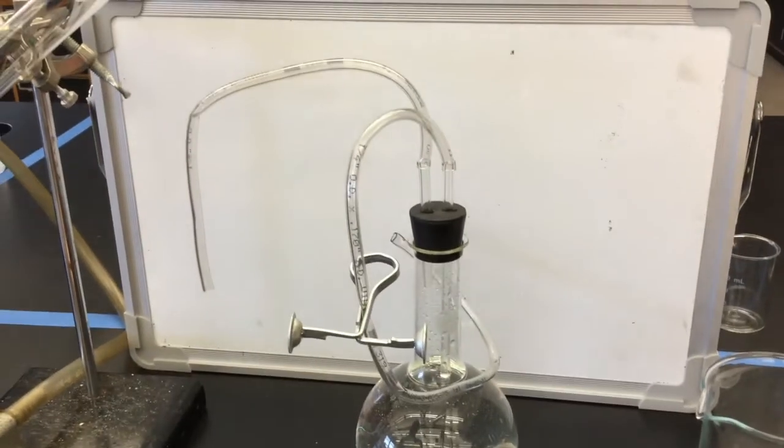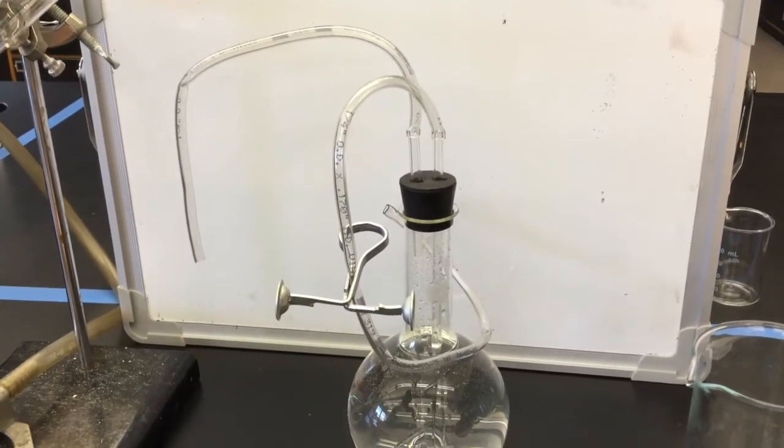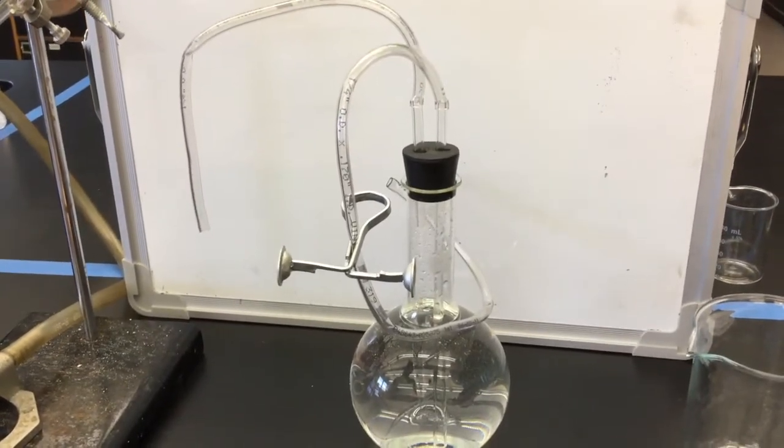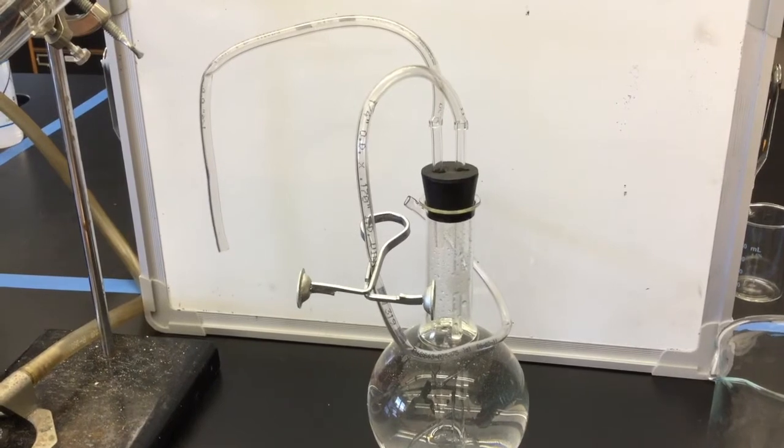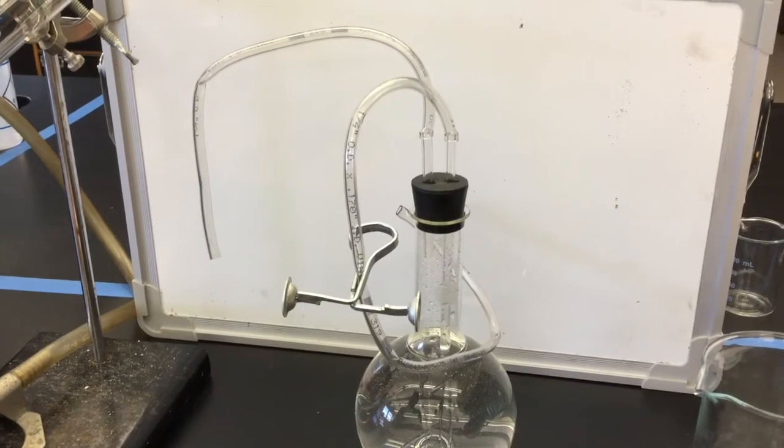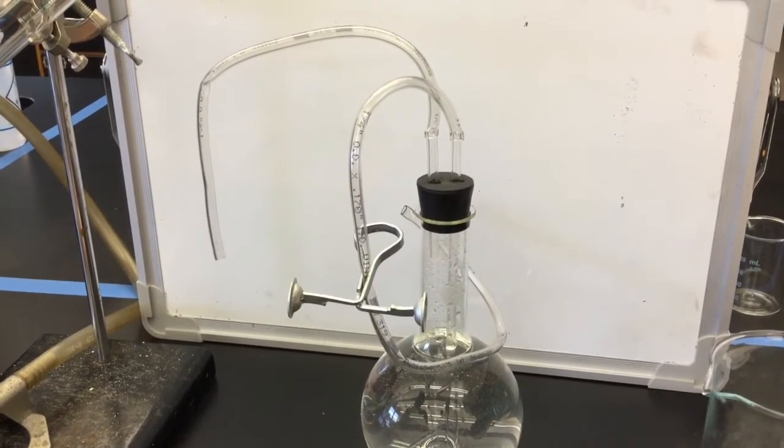Fill your Florence flask so that the water reaches the base of the neck. Then add the stopper with the two tubes. The tube that goes all the way to the bottom is for the water to leave the flask and has a pinch clamp attached to it. The other tube is for the gas from your reaction to enter the Florence flask. This is the gas intake tube.